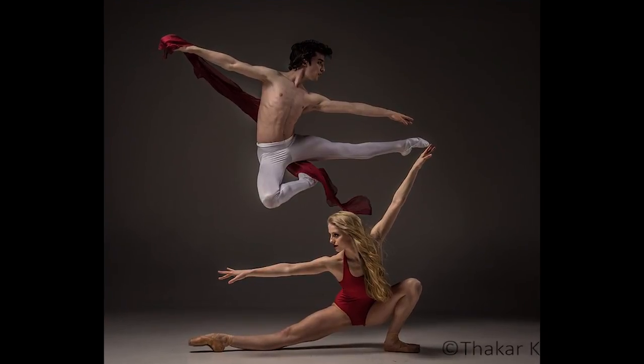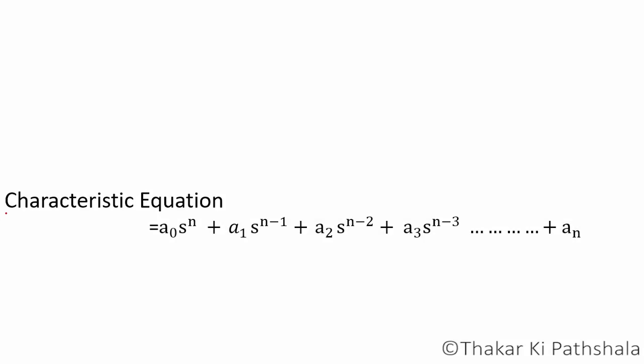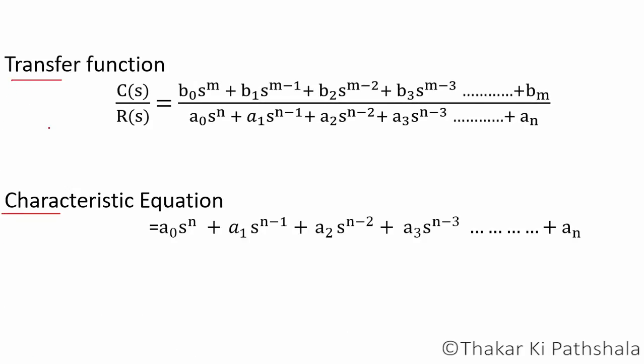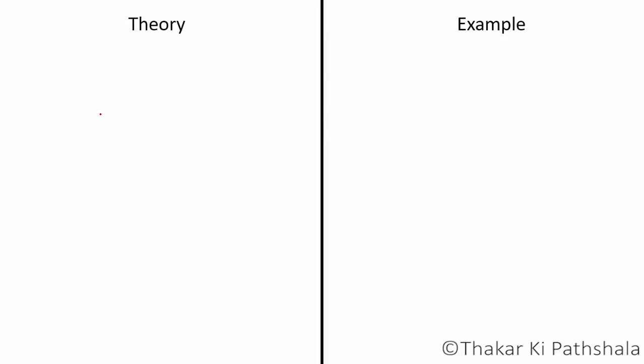First of all, to find out the stability of system via this method you will need a characteristic equation of the system. It depends on the mood of the examiner whether they directly give you the characteristic equation or they can give you the transfer function. If they give the transfer function, then first of all you will need to figure out the characteristic equation from that. This is the standard form of the transfer function. The denominator of transfer function is called the characteristic equation. Looks pretty simple, right? Don't worry, the rest of the method is also very simple. I will discuss here one simple example along with the theory so you can get a better understanding about this topic.